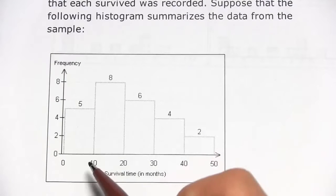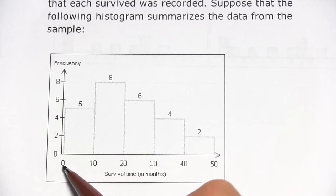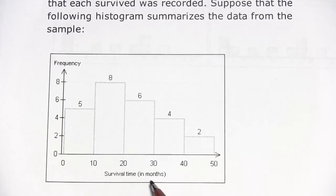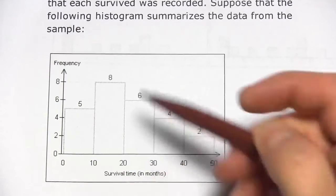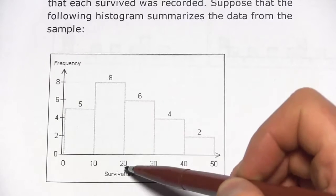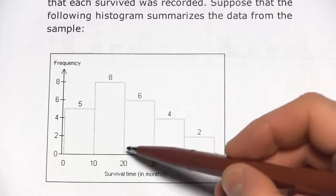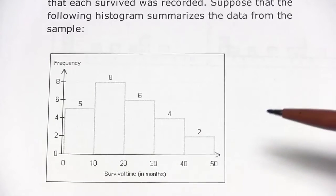Here we see in the histogram that the patients who survived between 0 and 10 months, this is survival time in months, there were five of those in the sample, eight survived from 10 to 20 months, six survived from 20 to 30 and so forth.